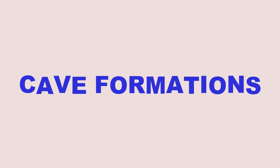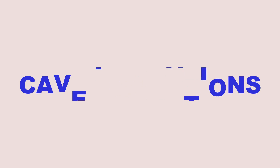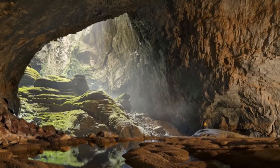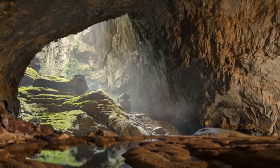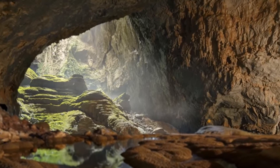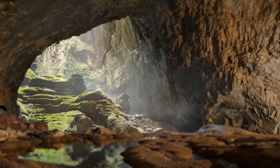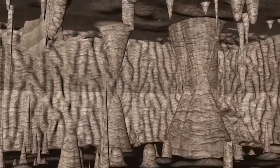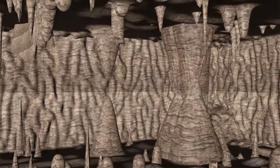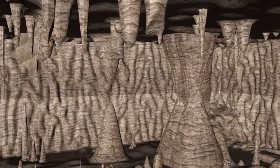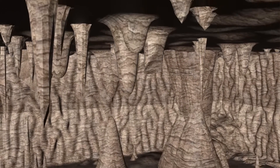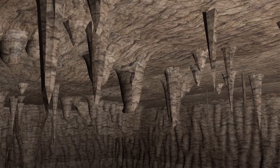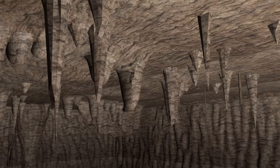Cave formations — some caves contain formations such as stalactites and stalagmites that can be used to reconstruct past climate. For example, the rate of growth of these formations is influenced by temperature and moisture, so scientists can use these rates to infer past conditions.